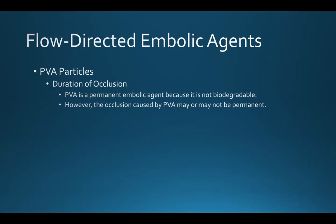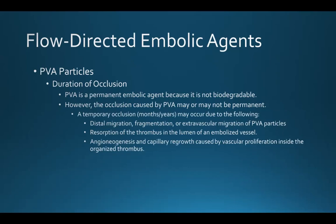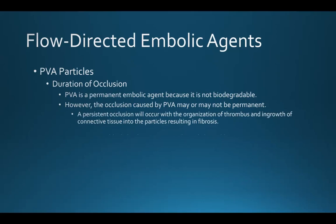PVA is a permanent embolic agent because it's not biodegradable. However, the occlusion caused by PVA may or may not be permanent. Temporary occlusions can occur and can last for months or even years. Distal migration, fragmentation, or extravascular migration of PVA particles can occur. The thrombus that forms between the PVA particles within the lumen of the embolized vessel can become resorbed. Angioneogenesis and capillary regrowth caused by vascular proliferation inside the organized thrombus can also lead to temporary occlusion. In cases where PVA-based occlusion is permanent, it is due to the organization of thrombus and ingrowth of connective tissue into the particles, resulting in fibrosis.